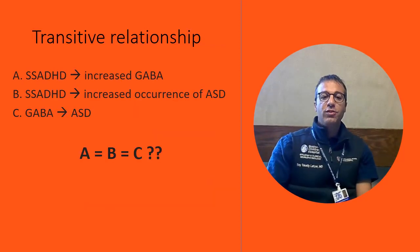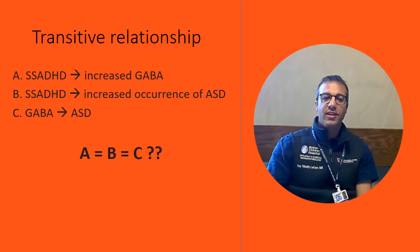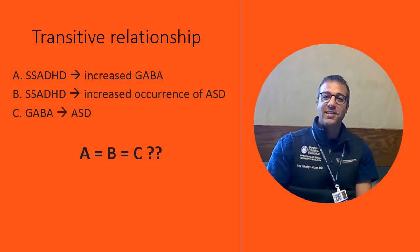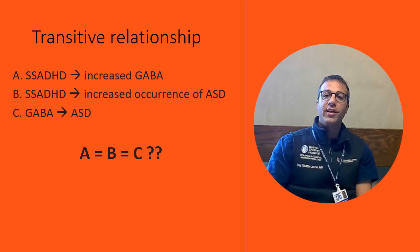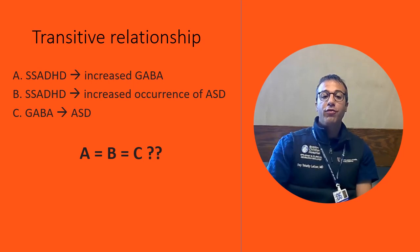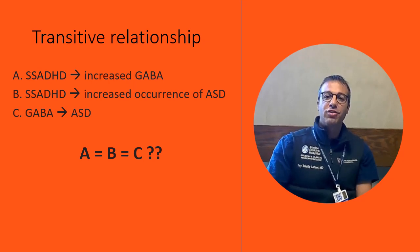Since we know there is an increased occurrence rate of autism spectrum disorder in SSADH deficiency, and since we know that the homeostasis of GABA is disrupted in SSADH deficiency, this allows us to examine the relationship between GABA and autism in general, and also to see whether different levels of GABA are associated with the onset and severity of autism spectrum symptoms in individuals with SSADH deficiency.